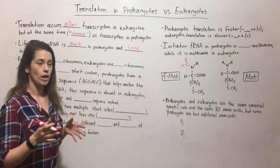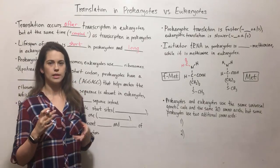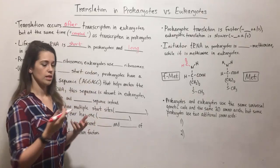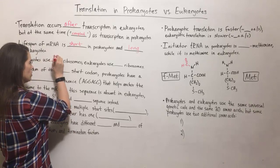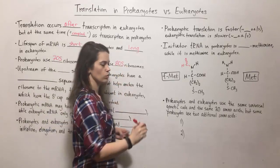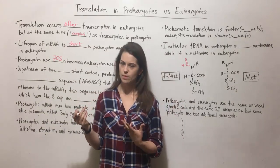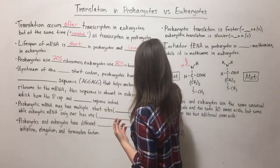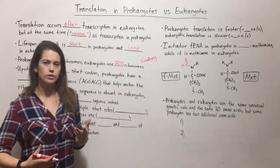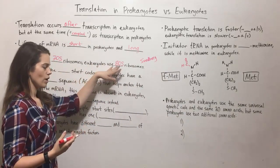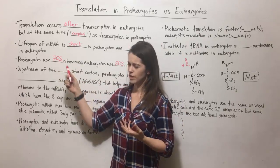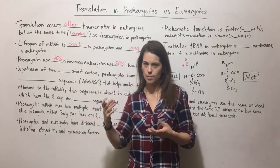Prokaryotes and eukaryotes also have different ribosomes. Remember that ribosomes are the cellular machinery where the mRNA is used as a template to build proteins. Prokaryotes use 70S ribosomes; eukaryotes use 80S ribosomes. The S here is a Svedberg unit — a sedimentation measure. Eukaryotes have 80S ribosomes that sediment a little faster when centrifuged. Prokaryotes have 70S ribosomes — they don't sediment as quickly; they're a little bit lighter.